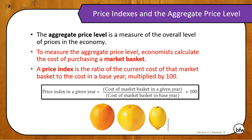The aggregate price level is a measure of the overall level of prices in the economy. To measure the aggregate price level, economists calculate the cost of purchasing a market basket of goods. You guys did this when you did your Kroger Click List shopping spree, where you looked up those 10 items and figured out the prices and added them all up. That's an example of a market basket.